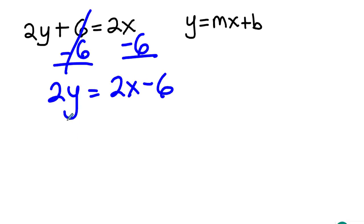And then the final thing I need to do to get y by itself is divide by two. Divide everything by two, right? Cancel that out. And we got y equals two divided by two is one. And then six divided by two is three.